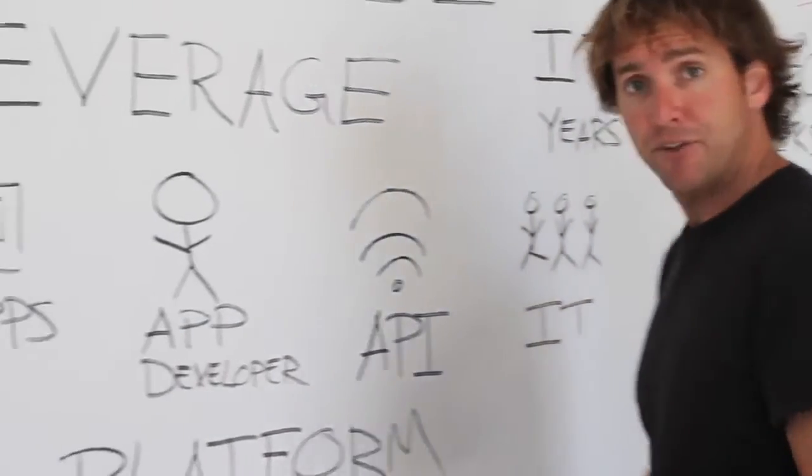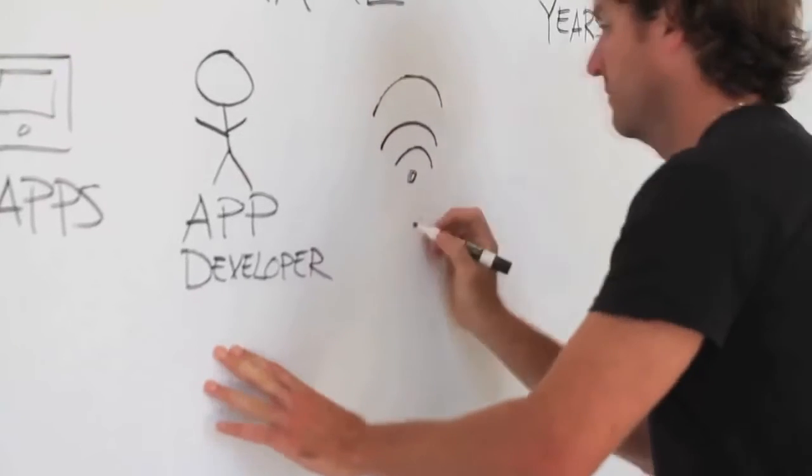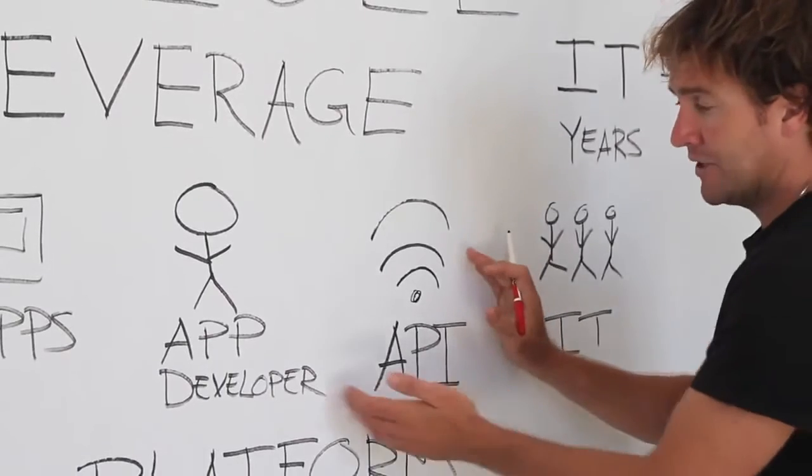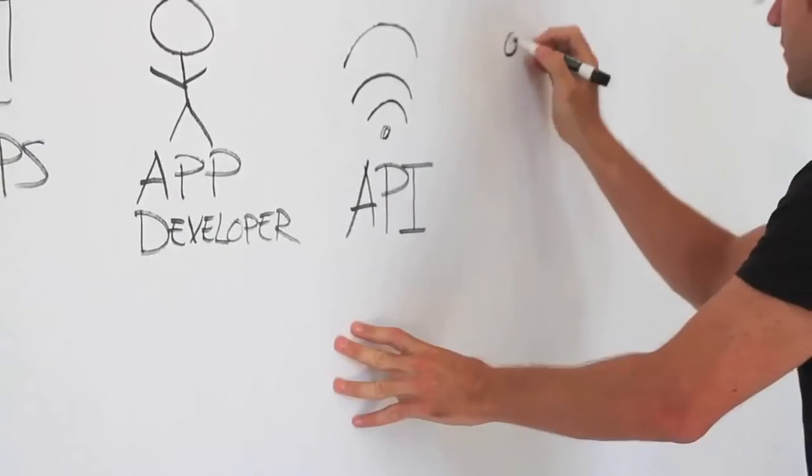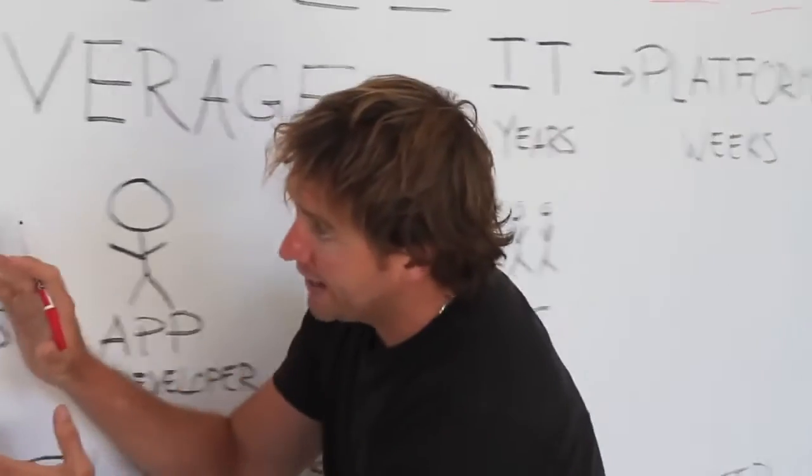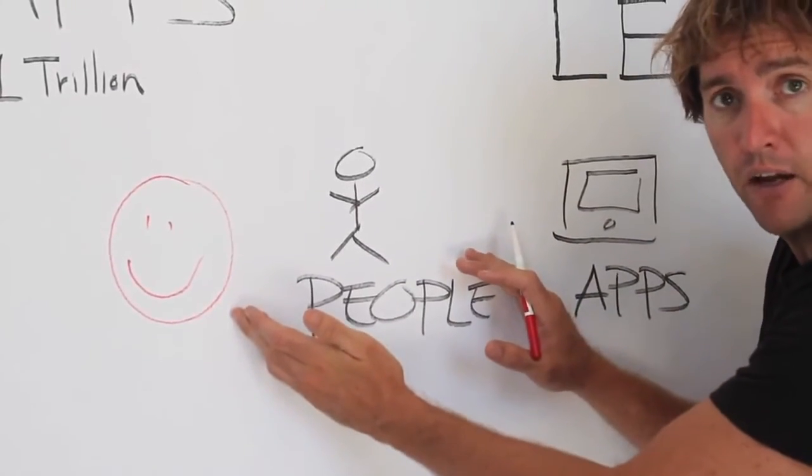And the key enabling technology for that is something called an API, an application programming interface. It's the API that allows an application developer to leverage all of your existing investments in IT and bring that all the way down this channel so you can hit new satisfied customers.